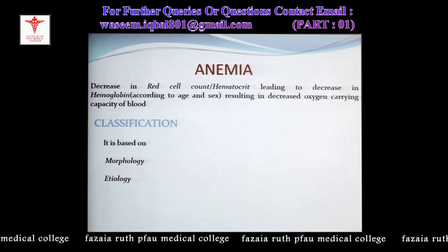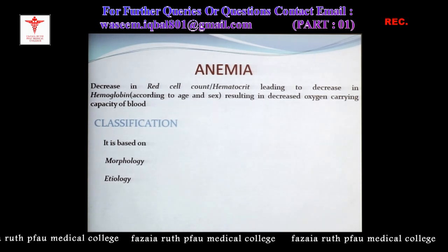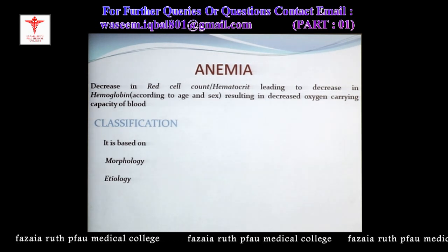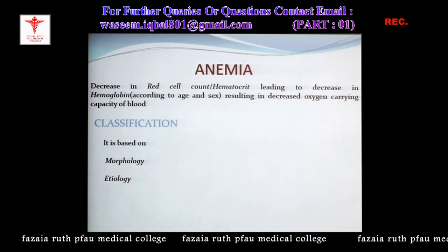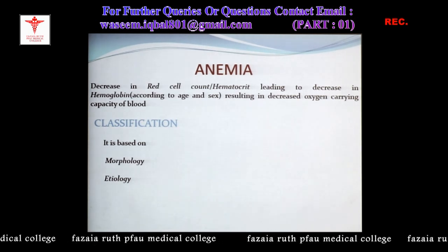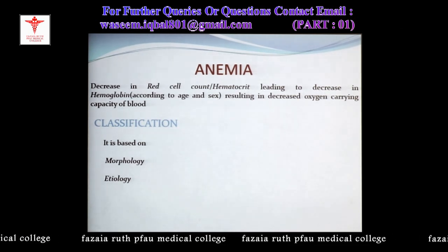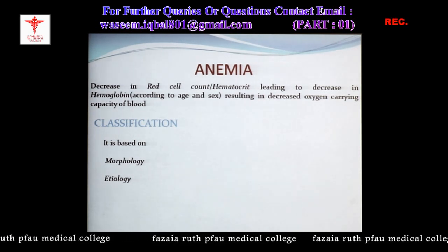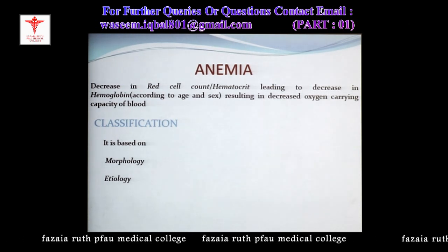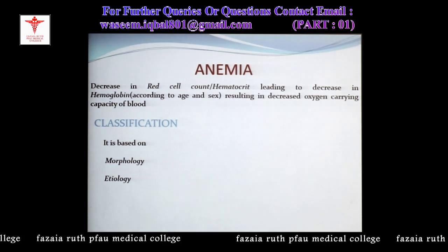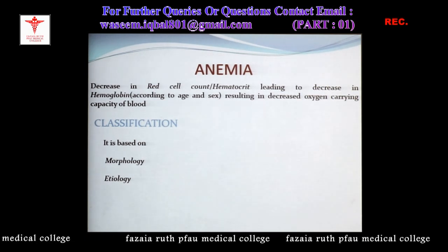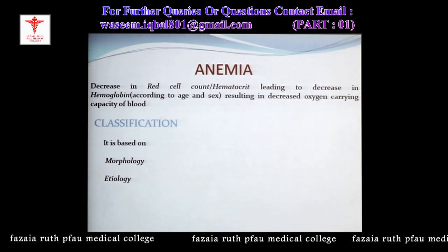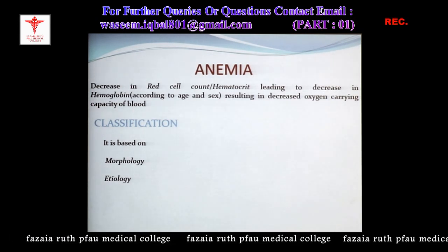The most important function of hemoglobin is to carry oxygen. Oxygenation occurs from the lungs to the left side of the heart, and then it is pumped to the peripheral circulation where oxygen is supplied to the tissues. When there is decrease in hemoglobin, there is decrease in oxygen carrying capacity, resulting in tissue hypoxia as a result of anemia.